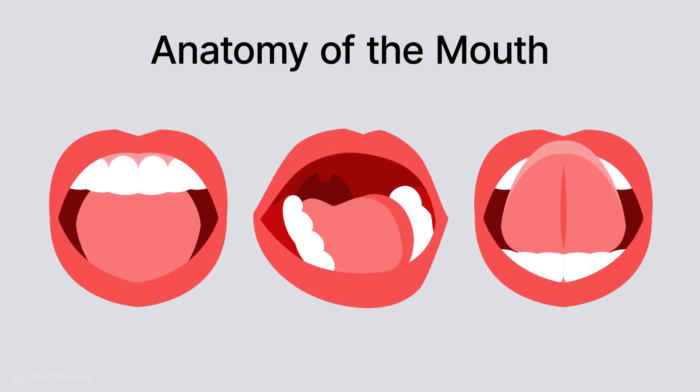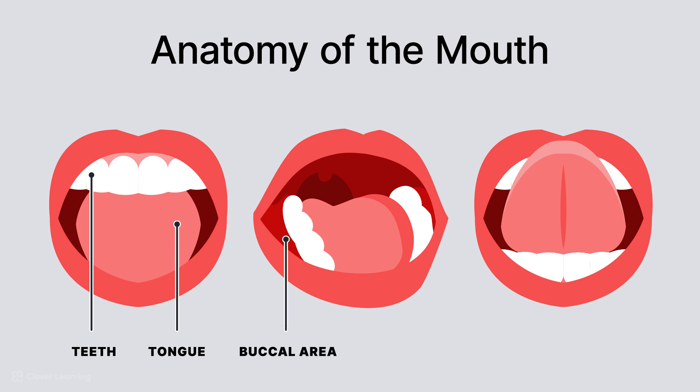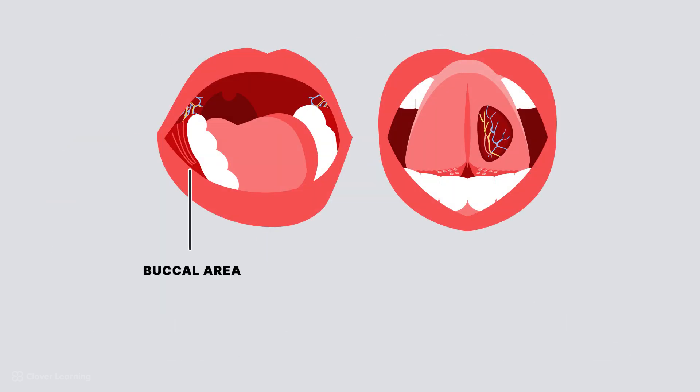In order to best understand these different administration techniques, first we need to identify the basic anatomy of the mouth. The main anatomy of the mouth includes the teeth, the tongue, the buccal area, which is the cheek lining, and the sublingual area, or the area underneath the tongue. Understanding this anatomy and how each one affects drug administration is important.